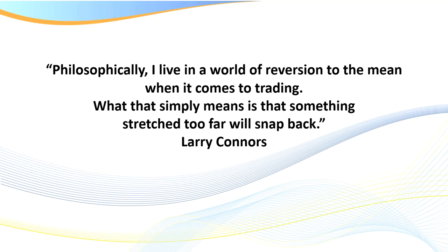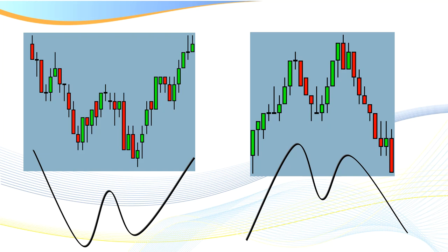Philosophically, I live in a world of reversion to the mean — something stretched too far will snap back, and that's where we come to the T3. Now, when we look at what makes up divergence: for a long trade, I've got a lower low on price and on my divergence indicator a higher low. To go short, I've got a higher high on price and a lower high on my oscillator.